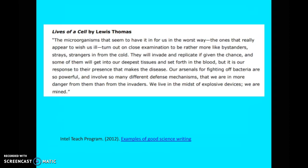'Our arsenals for fighting off bacteria are so powerful and involve so many different defense mechanisms that we are in more danger from them than from the invaders. We live in a mix of explosive devices.' Very vivid language describing very complex biological processes. One mechanism Lewis Thomas uses is a lot of 'we,' 'our,' and personal pronouns to draw the reader in. He also uses analogy very successfully to explain to a lay audience how disease mechanisms work at the cell level. This is science writing at its best for a general audience — very clear, vivid, and draws the reader in — while still following active language principles.